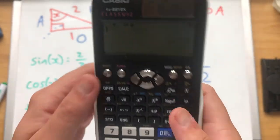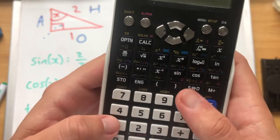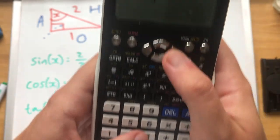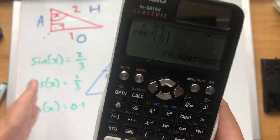Cos x equals 1 third. So same idea, cos to the minus 1, cos x equals 1 third, cos to the minus 1, 1 third. Sorry about how out of shot it is. And that's what cos x is.